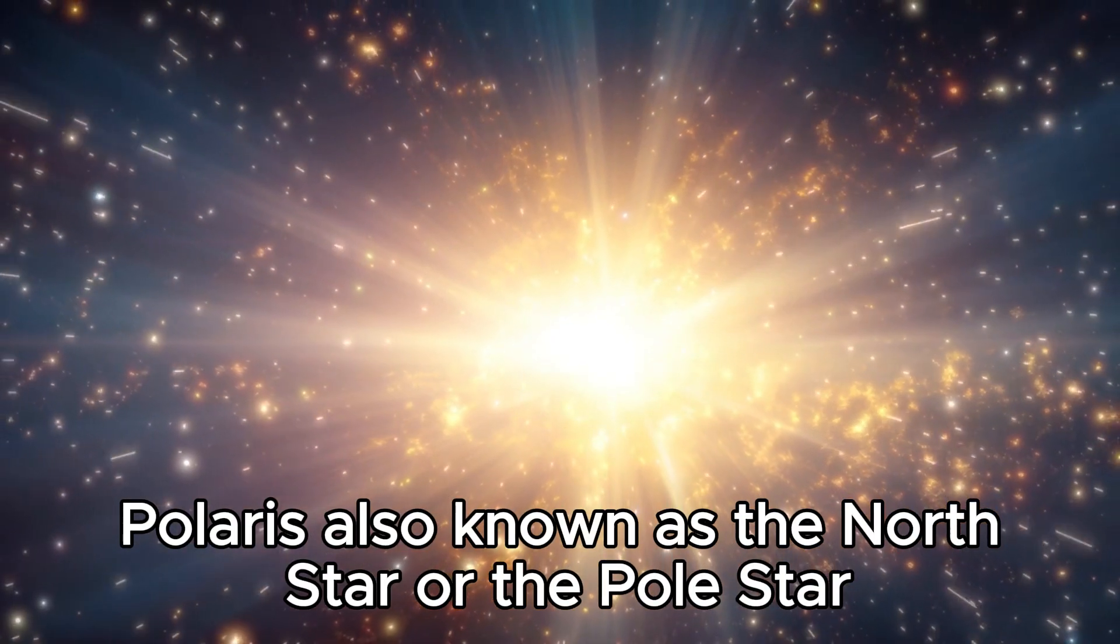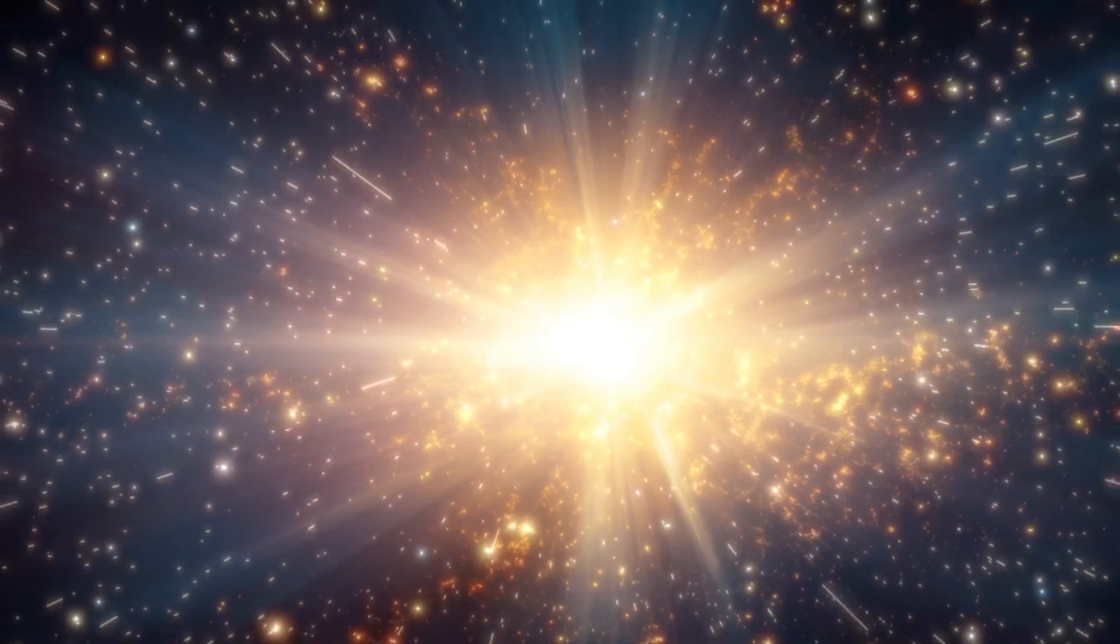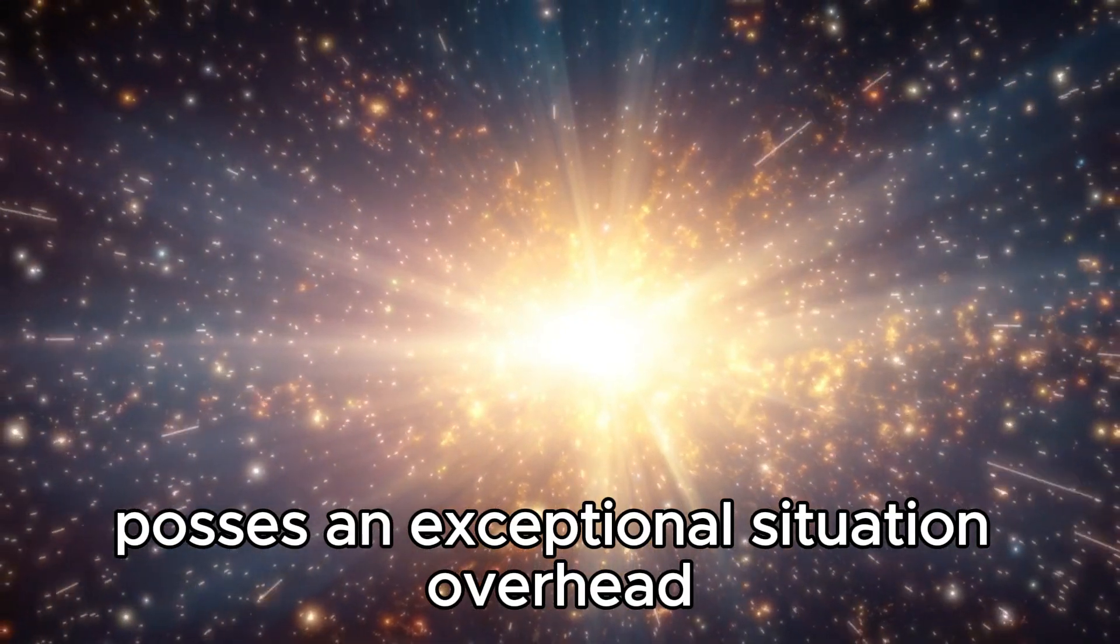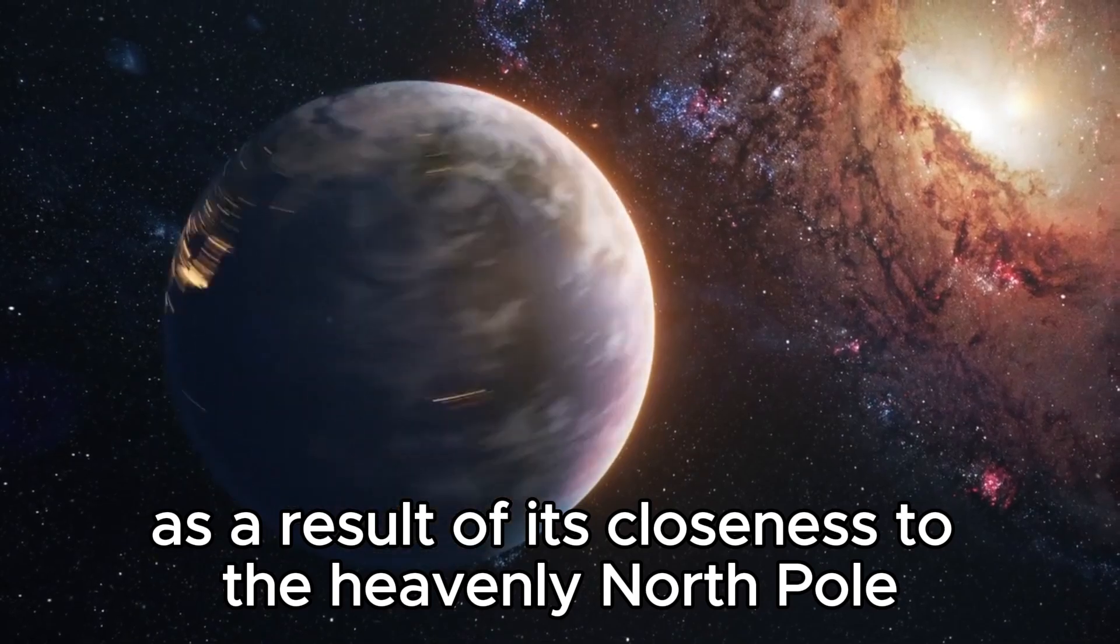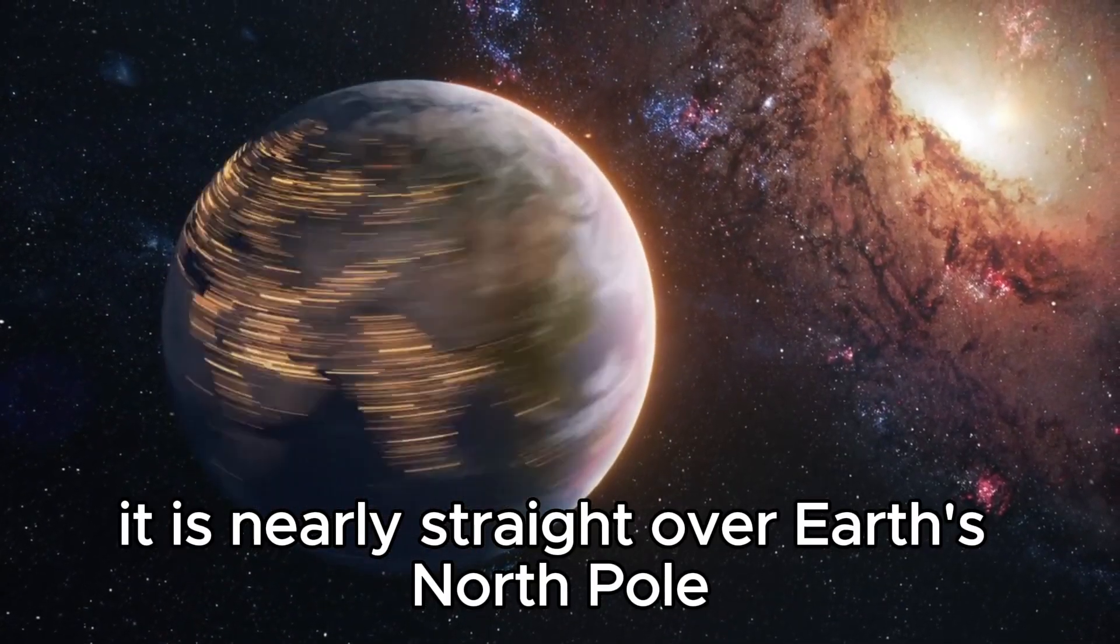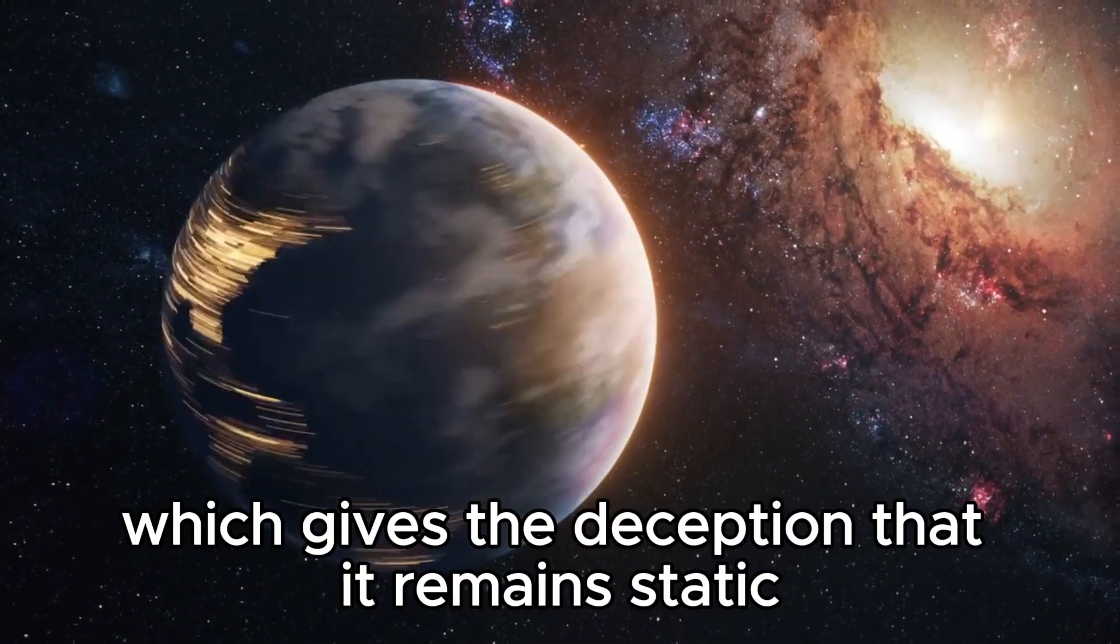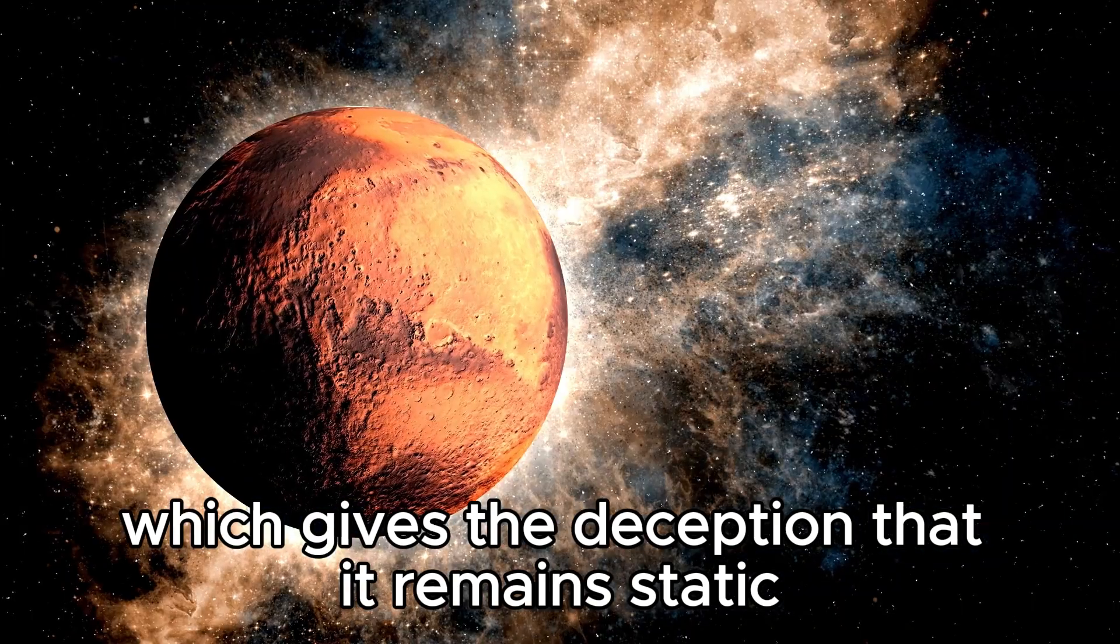Polaris, also known as the North Star or the Pole Star, possesses an exceptional situation overhead as a result of its closeness to the heavenly North Pole. It is nearly straight over Earth's North Pole, which gives the deception that it remains static in the northern sky.